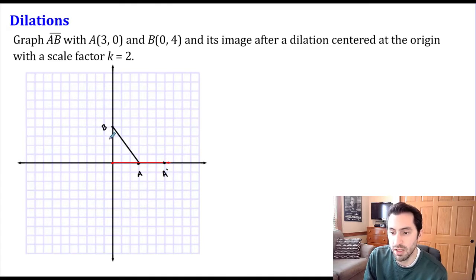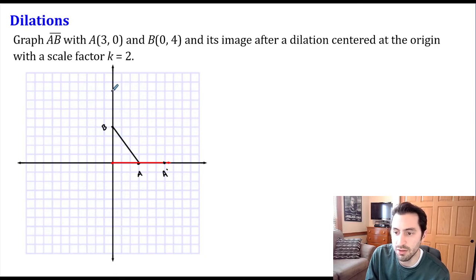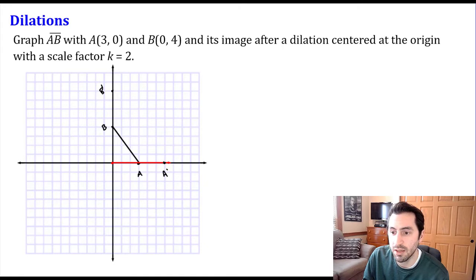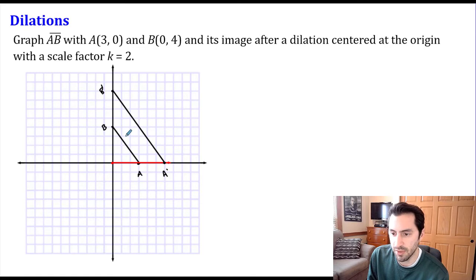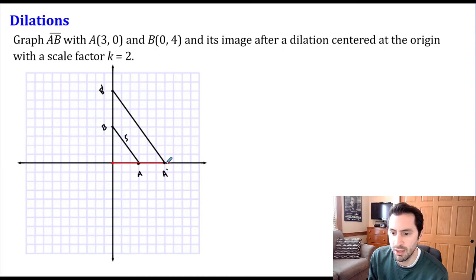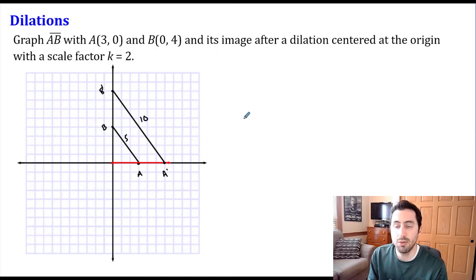Same idea with B. B is four units away from our center of dilation. Using the scale factor of two, B prime is going to end up being eight units away. If we compare the segment lengths: segment AB has a length of five — a right triangle with legs 3 and 4 gives a hypotenuse of 5. A prime B prime has legs of length six and eight, so it has a length of ten.